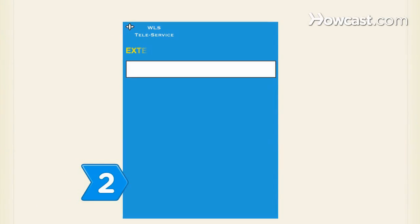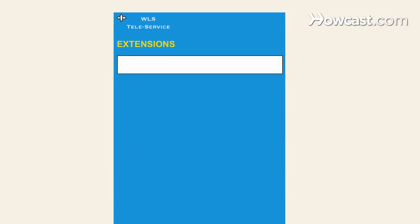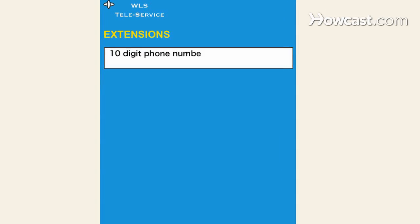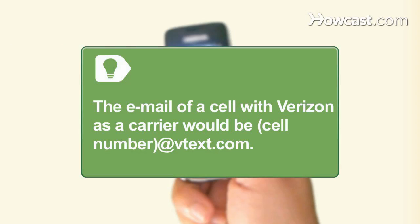Step 2. Determine the extension of the cell phone carrier. The email address of the cell phone will be the 10-digit cell phone number followed by the carrier's extension. For example, a Verizon cell phone's email address is the cell phone number followed by @vtext.com.